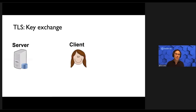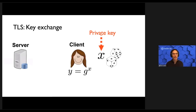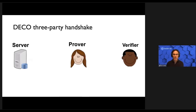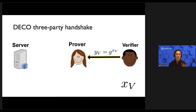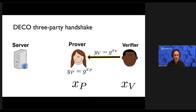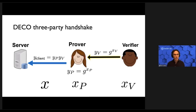In a normal TLS key exchange, the client randomly generates a private key X, then computes the corresponding public key Y, and sends Y sub client to the server. In Deco, what happens is something like this: the verifier first generates his own private key X sub V at random and computes its public key, sending it to the prover. The prover then generates her own private key X sub P, computes the corresponding public key Y sub P, and what she sends to the server is the product of her public key and the verifier's public key. Thanks to an additive homomorphism, the private key X corresponding to Y sub client — the public key sent to the server — is exactly the sum of the private key of the prover and the private key of the verifier. So we've split the private key.